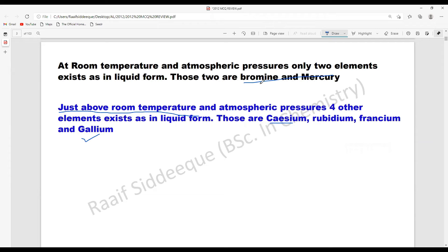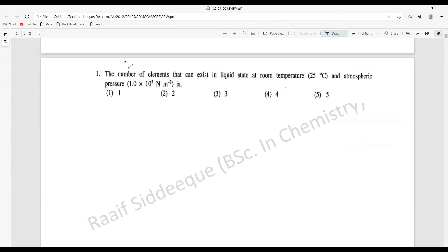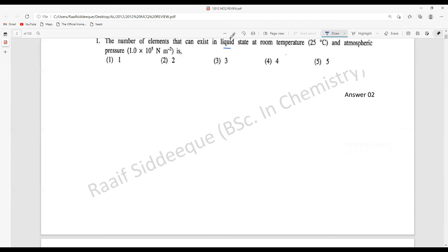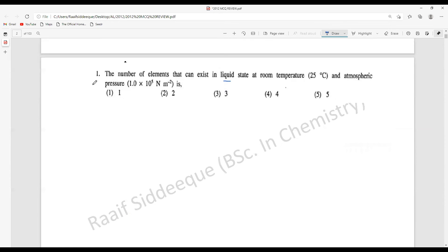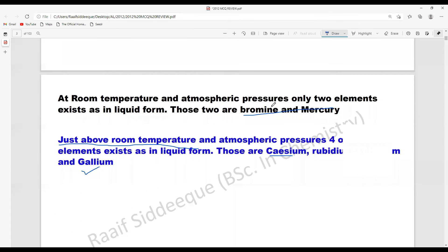So make sure other than bromine and mercury, you know these four elements as well. So at room temperature and atmospheric pressure, basically bromine and mercury are the two elements that will be present in the liquid state. Only two elements: bromine and mercury.